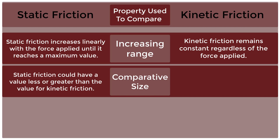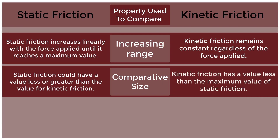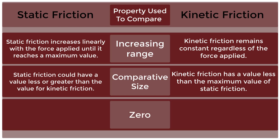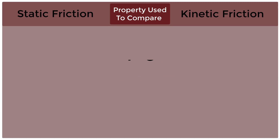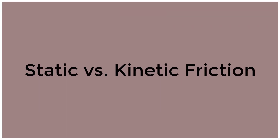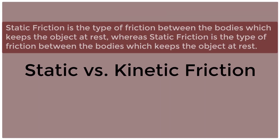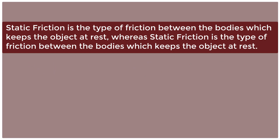In terms of comparative size: static friction can have a value less than or greater than kinetic friction, while kinetic friction always has a value less than the maximum value of static friction. Static friction can be zero, but kinetic friction cannot be zero.